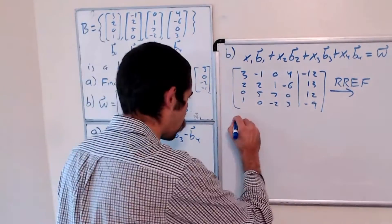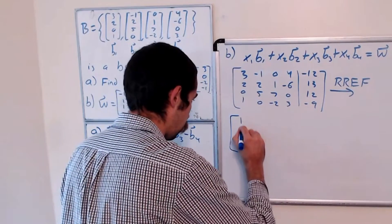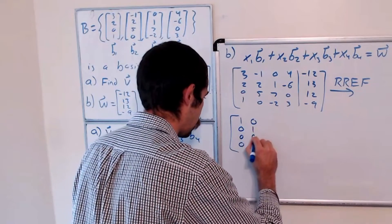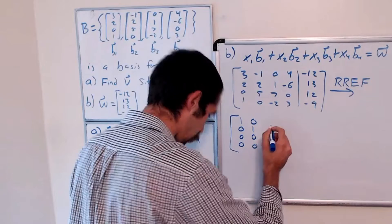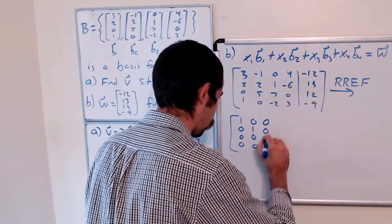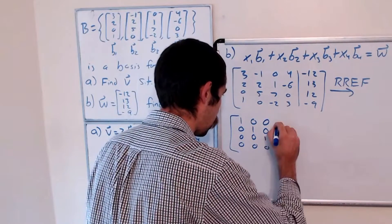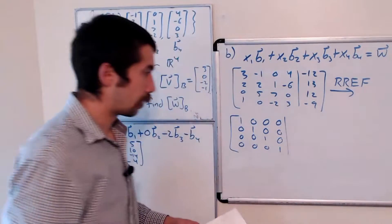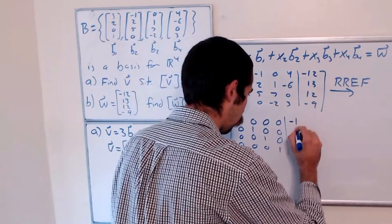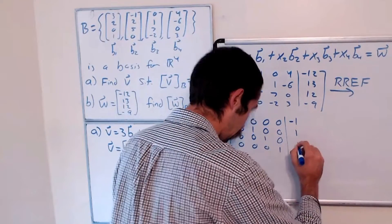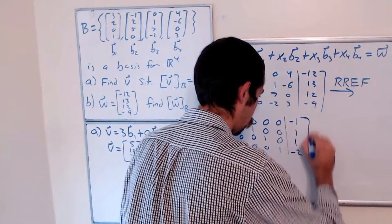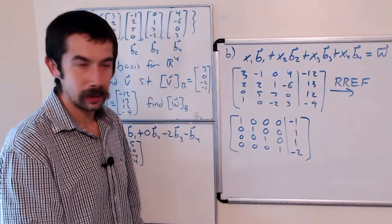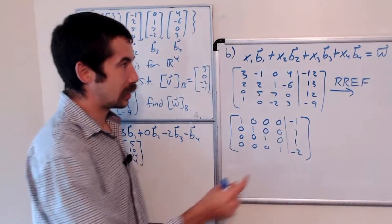When we row reduce, the matrix reduces to the identity matrix on the left — so 1, 0, 0, 0 in the first row; 0, 1, 0, 0 in the second; 0, 0, 1, 0 in the third; and 0, 0, 0, 1 in the fourth — and then the right column gives us [-1, 1, 1, -2].